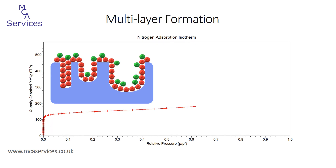As we continue to increase relative pressure, we start to see multilayer adsorption occurring — that's adsorption of nitrogen on nitrogen, building up successive layers. This occurs on the surface of the material and also within the larger pores, the mesopores and the macropores. To differentiate between the monolayer and the multilayer, we're showing the multilayer adsorption as green spheres, and this also corresponds to the slight increase in the adsorption isotherm that we can see on the plot below.